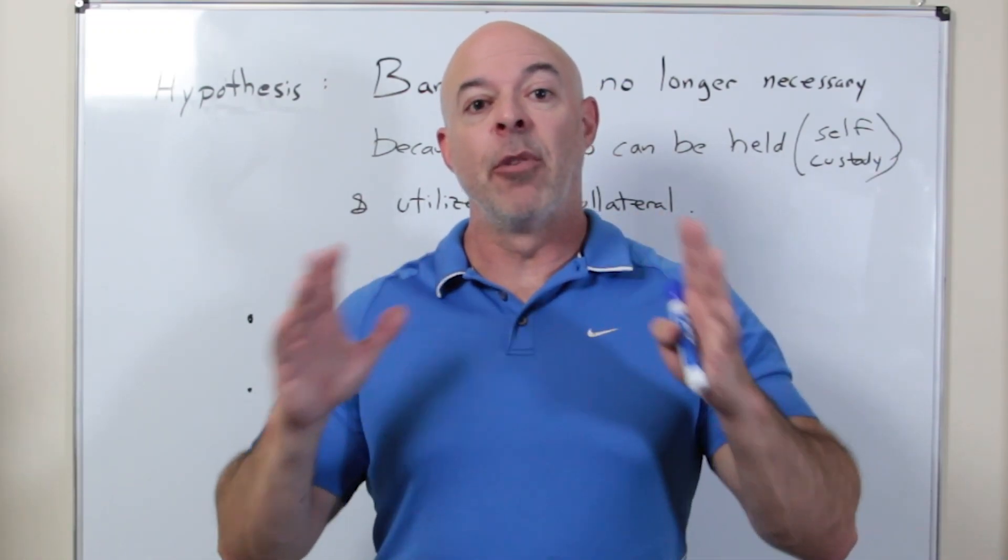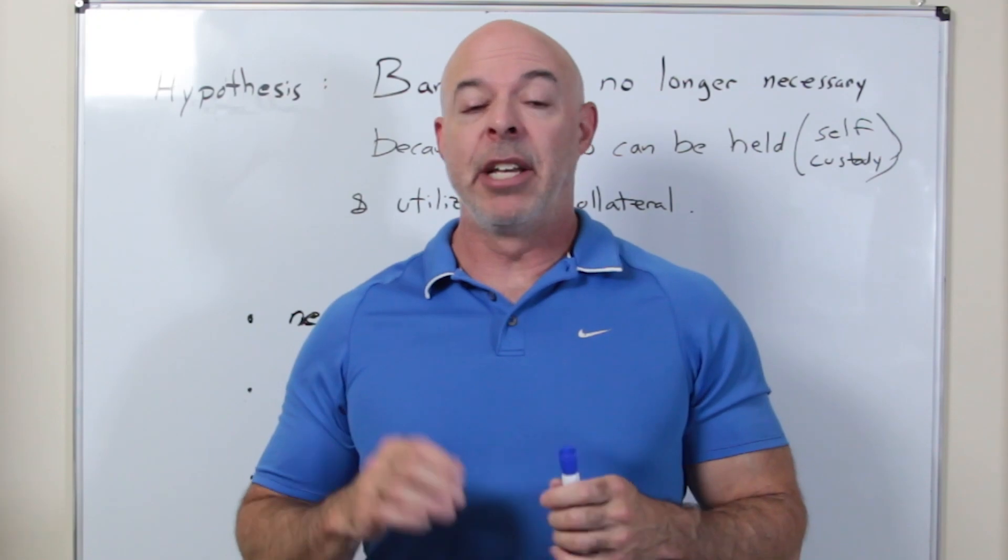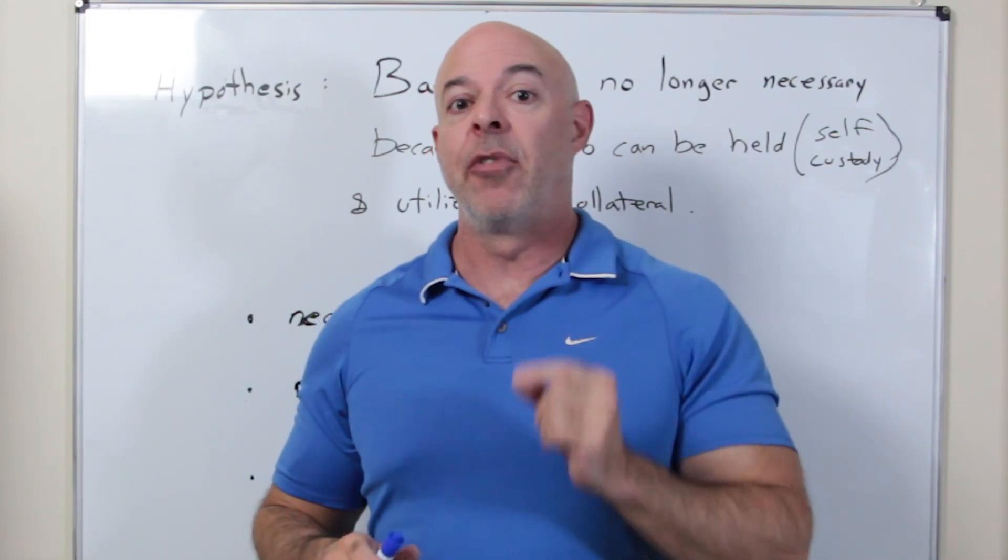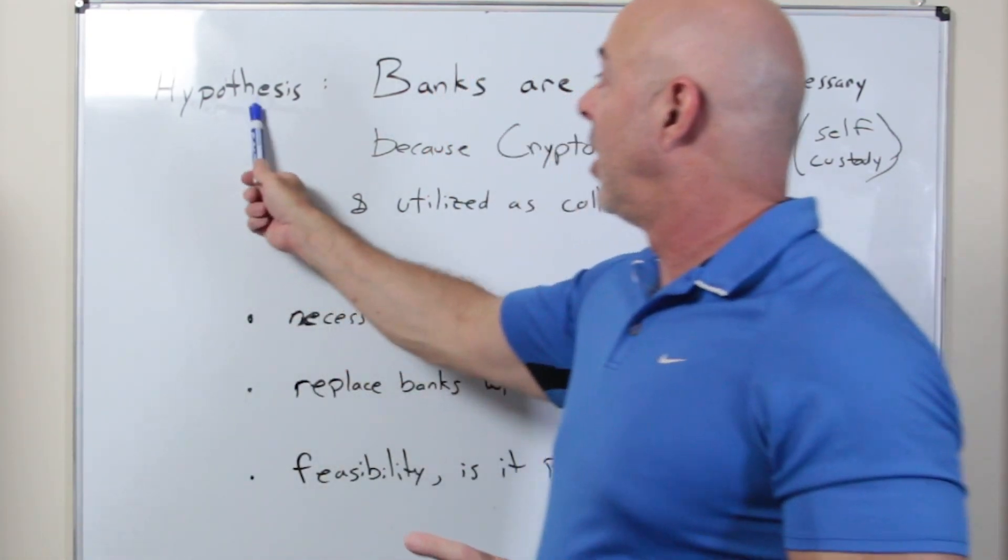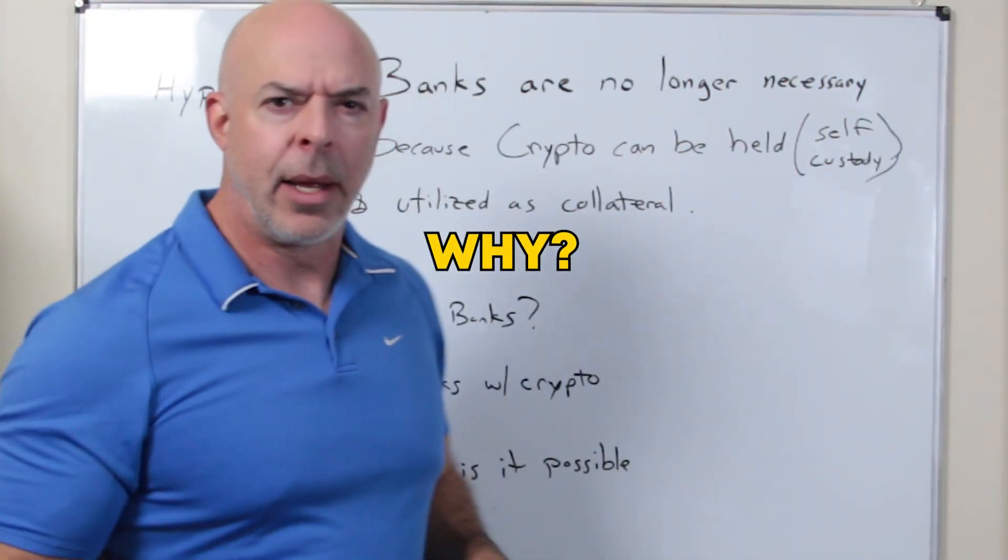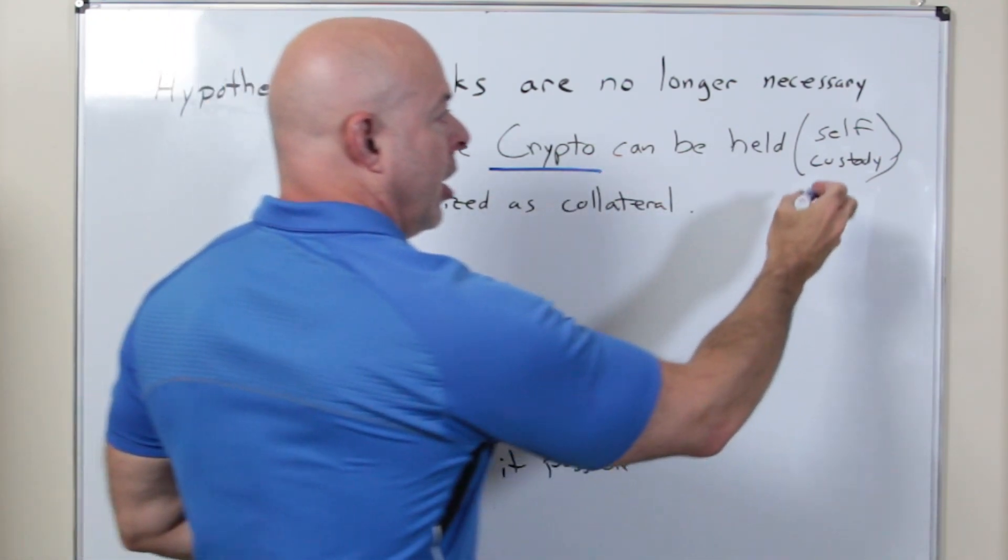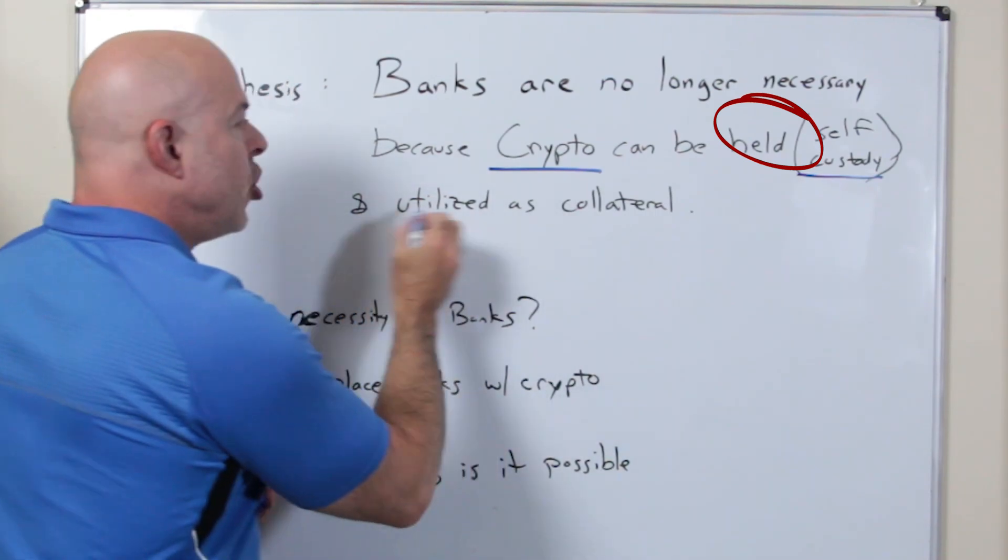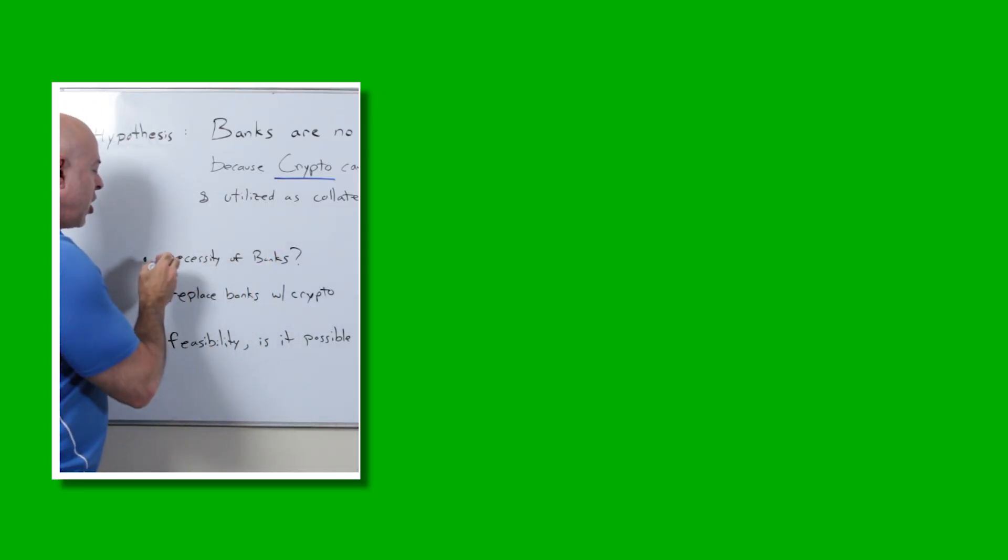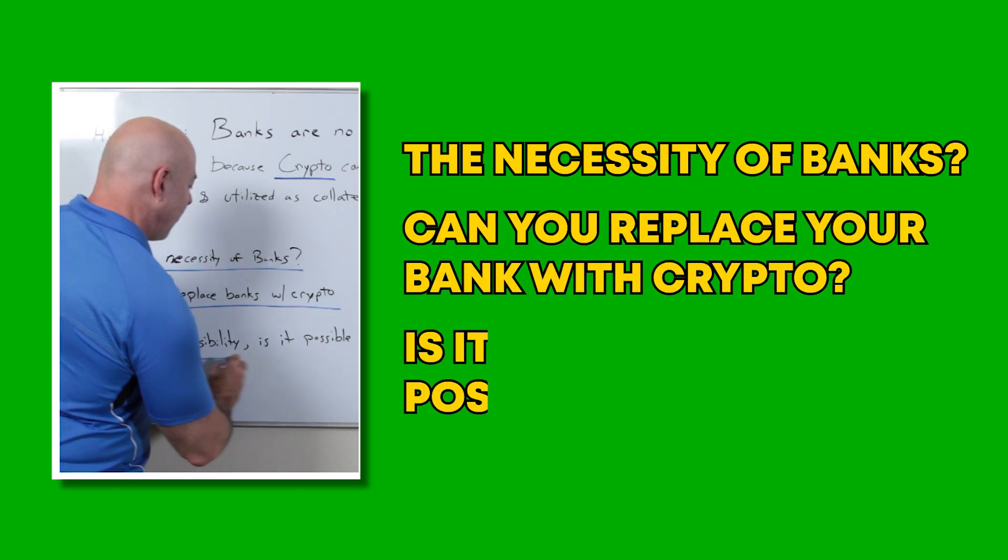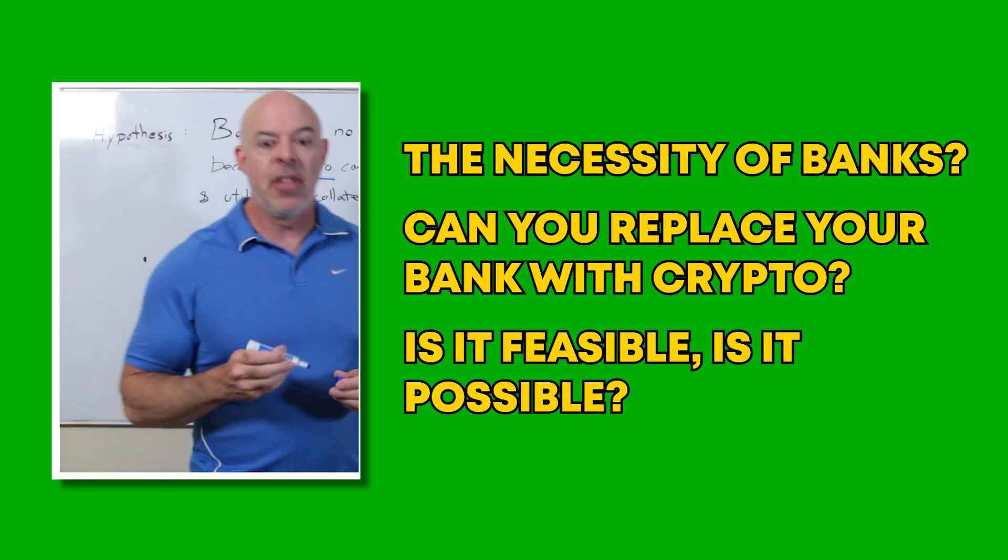Take this video for informational purposes only, not a financial advisor. But I'm going to explain what's happening in the finance space because you need to know what's going on. The hypothesis is banks are no longer necessary. Why? Because crypto can be held in self-custody and utilized as collateral. We'll talk about the necessity of banks, can you actually replace banks with crypto, and is it feasible?